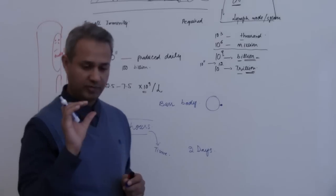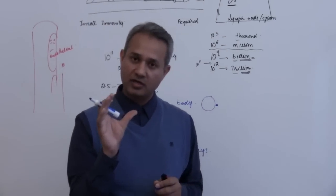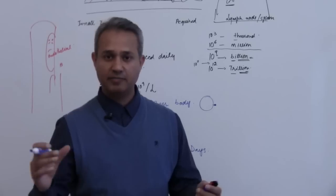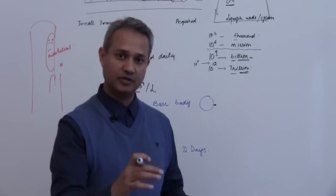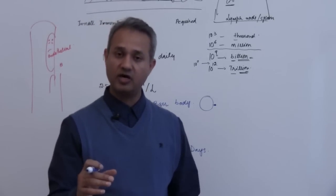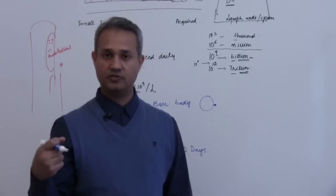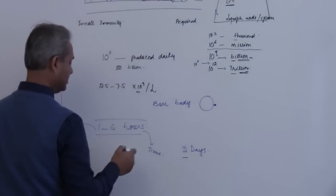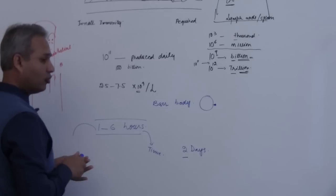How would they die? They will become senile, old. They do not really just die and say I am dead. They become senile and the macrophage comes and detects the senile neutrophil. We talked about CD31 and then it would phagocytose that neutrophil. So up to two days in the tissue, one to six hours in the blood.